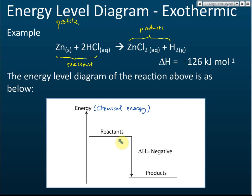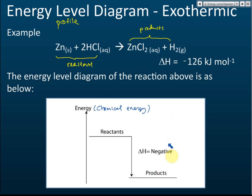This is because chemical energy has been released to the surroundings — when energy is released to the surroundings, the energy decreases. You need to write the reactants, such as zinc plus 2HCl, and then write the products.